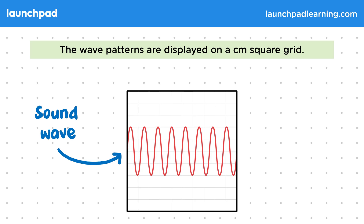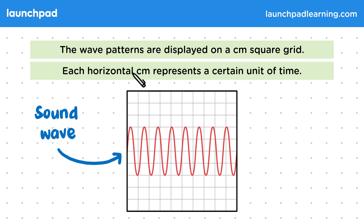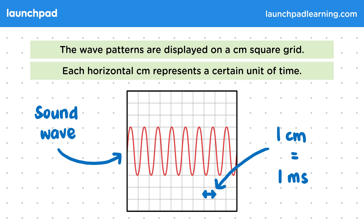In other words, this is actually a graph with time on our x-axis. Specifically, each horizontal centimetre represents a certain unit of time. In this case, each centimetre represents one millisecond. It's important to understand that the distance between two peaks on the display does not tell us the wavelength. As our horizontal scale is time, we instead use this to measure the period.